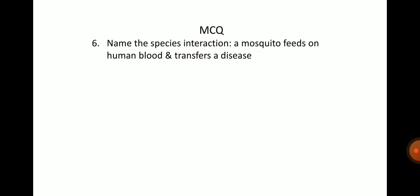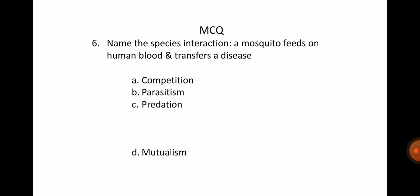Next MCQ: name the species interaction where a mosquito feeds on human blood and transfers a disease. Options: A. Competition, B. Parasitism, C. Predation, D. Mutualism. The answer is B, parasitism.